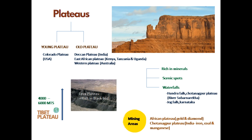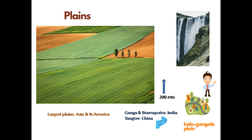There are lava plateaus that are rich in black soil and are very fertile. Plateaus are also very rich in minerals, so many mining factories are found here. The African Plateau has gold and diamond minerals. Likewise, the Chotanagpur Plateau in India is rich in iron, coal, and manganese. Plateaus also have many scenic spots and waterfalls — Hundru Falls, located in the Chotanagpur Plateau on the river Subarnarekha, and Jog Falls in Karnataka are a few examples.